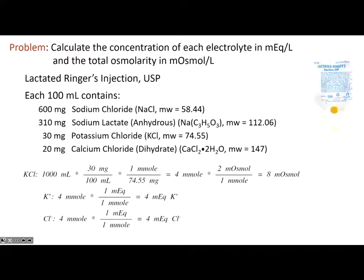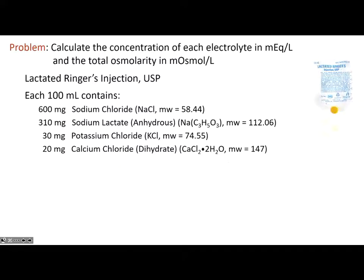Potassium chloride works the same way. Starting with 1,000 mL times its concentration, divided by molecular weight to get millimoles. For milliosmoles: there are two particles (one potassium, one chloride) so multiply by two. For milliequivalents, the valence on potassium and chloride is each one, so multiply each set by one.